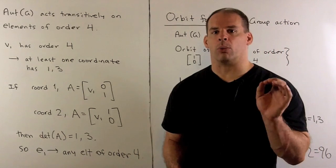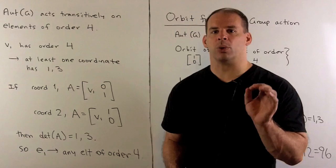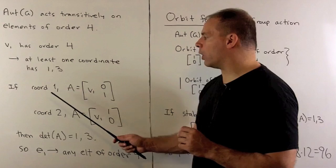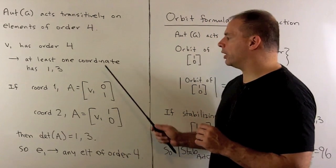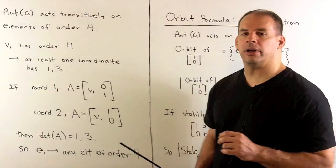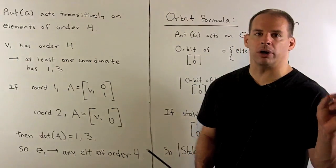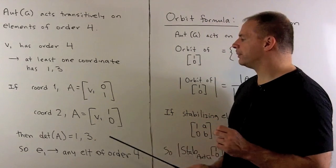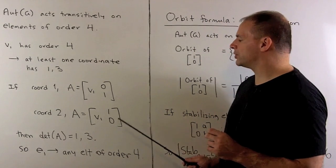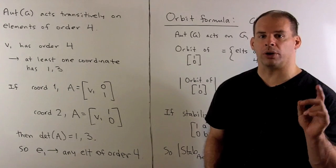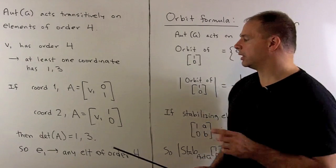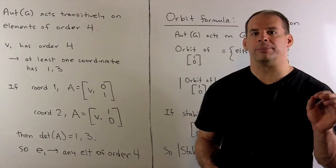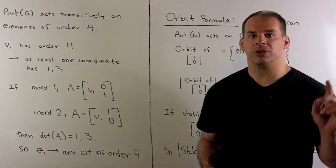Now, I'm going to use that to construct an automorphism corresponding to a matrix with determinant equal to 1 or 3. So, if the 1 or 3 is in coordinate 1, we'll define A as E1 goes to V1, E2 goes to itself. The determinant of A is 1 or 3. If the 1 or 3 is in coordinate 2, we define A as E1 goes to V1, E2 goes to E1. And again, determinant is 1 or 3. So, we see that we can carry E1 to any element of order 4 by an automorphism. So, transitive.